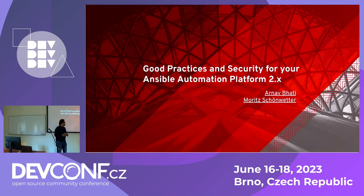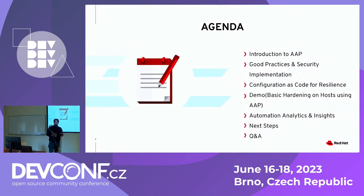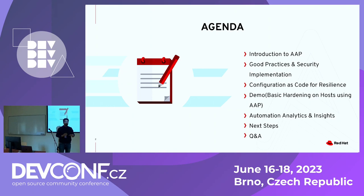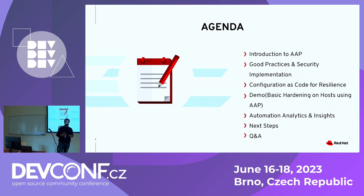Let's begin with the agenda. Today I want to keep this session and the slides very interactive. After the presentation, I'd really like you all to go and play along with the demo I've created. You can install it on your local laptops or spin up three VMs on any cloud and install AAP. Today we'll cover what exactly Ansible Automation Platform is, some good practices and security implementations for AAP as well as the hosts you're automating, and configuration as code.